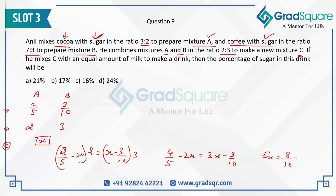Simplifying further, we get 5X = 8/10 + 9/10 = 17/10, which means X = 17/50. This is the strength of sugar in mixture C that we have prepared.